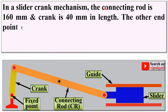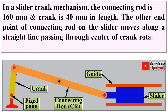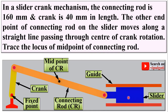The length of the connecting rod is given as 160 mm, and the crank is 40 mm. The other end point of the connecting rod — that means the point on the slider — moves along a straight line passing through the center of the crank rotation, so these both are on the same line. Trace the locus of the midpoint of the connecting rod during one complete revolution of the crank.